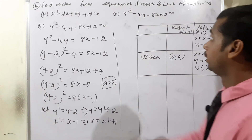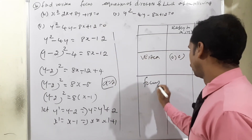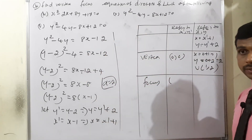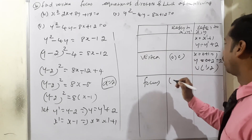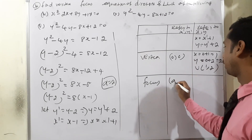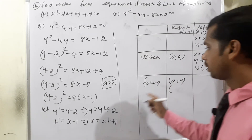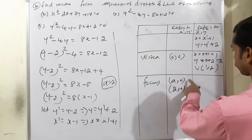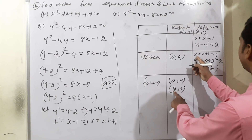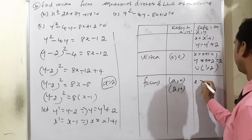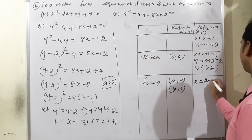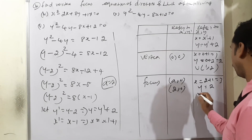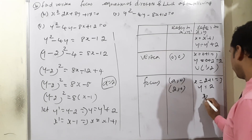For focus: right side open means focus at (a, 0) in x'y' system, so x' = 2, y' = 0. Converting: x = 2 + 1 = 3, y = 0 + 2 = 2. Therefore focus is at (3, 2).